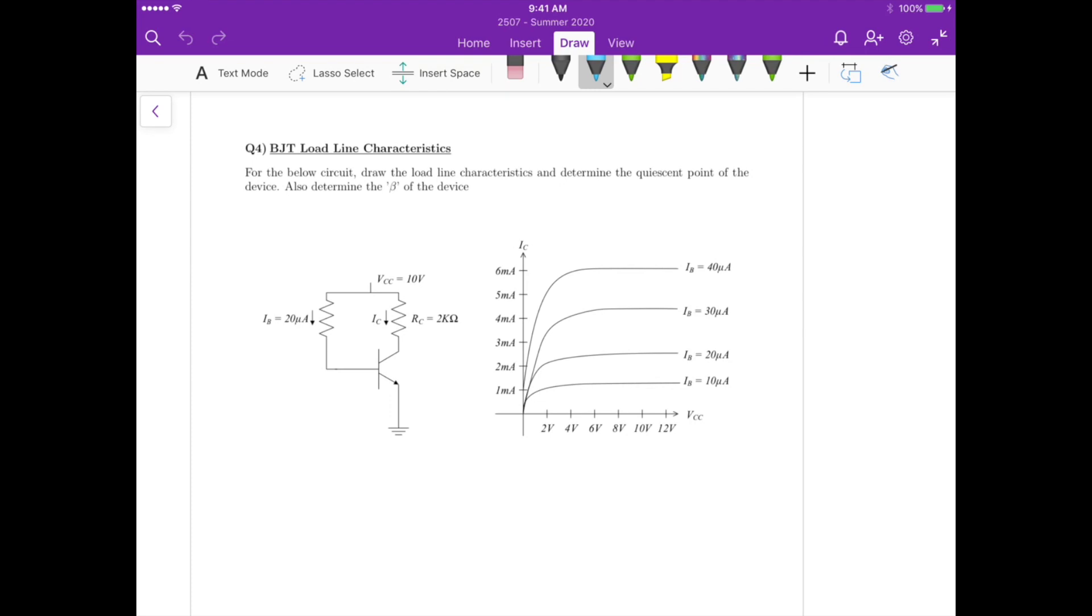If we look at the circuit here, we know that the current IB is 20 microamperes. So we're going to be mostly interested in the intersection of the load line with the IB curve of 20 microamperes. It's basically this right here.